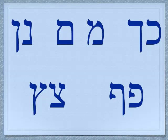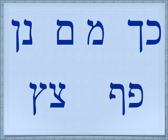You see the mem — remember the mem is open at the bottom but the mem sofit is closed all the way around. Here is the nun; the nun sofit goes below the line but it's a narrow letter. Pe with his little uvula hanging down, and the pe sofit has the same form. Then the tsadi — maybe a man on his knees — and the tsadi sofit also extends below the line.